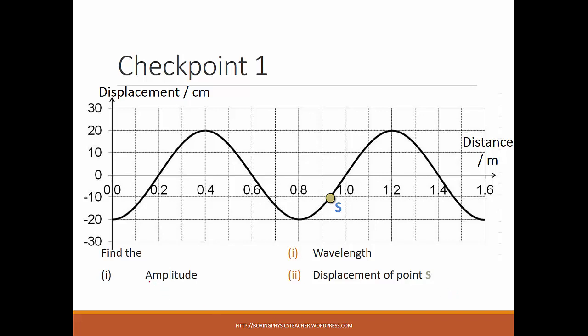For the first one, if you want to find the amplitude for a wave on a displacement-distance graph, you just only need to look at the peak from the center — from 0 to the peak — or from the center to the trough. In this case, the answer is 20 centimeters.